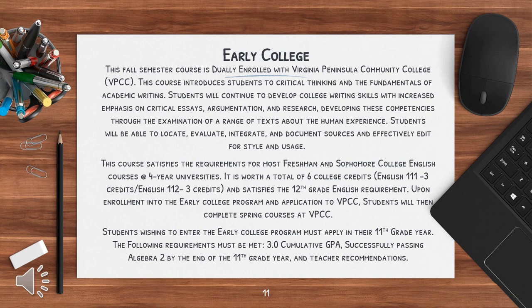Early College: This fall semester course is dually enrolled with Virginia Peninsula Community College. This course introduces students to critical thinking and the fundamentals of academic writing. Students will continue to develop college writing skills with increased emphasis on critical essays, argumentation, and research, developing these competencies through the examination of a range of texts about the human experience. Students will be able to locate, evaluate, integrate, and document sources and effectively edit for style and usage. This course satisfies the requirements for most freshman and sophomore college English courses at four-year universities and is worth a total of six college credits.